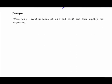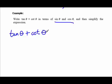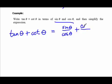The next example: take tangent theta plus cotangent theta and rewrite it using nothing but sines and cosines. Start by converting each term — tangent is sine over cosine, and cotangent is cosine over sine. Now we need to add these two fractions together, so we find a common denominator.